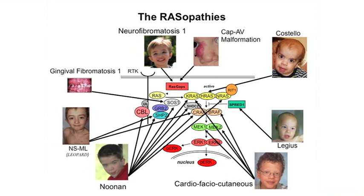Over the last not even 10 years — maybe about seven years ago — all these different syndromes that we're going to talk about today became known and associated with this really important pathway, and we called them the RASopathies.